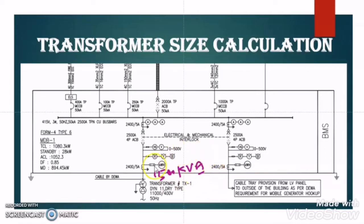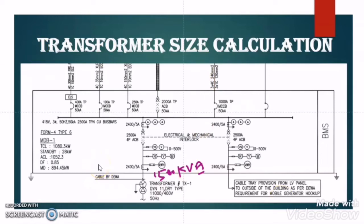But we are not done yet. We calculated the transformer size for this MDB, but we have to do an adequacy check to confirm this transformer fulfills two requirements. First, at the time of starting the largest motor connected with this LV panel, the overloading on the transformer must be under the allowable limit. Second, at the time of starting the largest motor, the voltage dip created must also be under the allowable limit. If our calculated transformer rating satisfies both criteria, then the rating is confirmed as correct. Otherwise, we have to go for a higher transformer size.